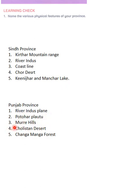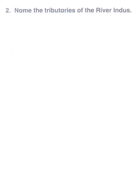Now we talk about Punjab: River Indus Plain, Potohar Plateau, Murree Hills, Cholistan desert, and Changa Manga forests. Those are just five places listed; you may add another five for both provinces. If you're from Balochistan, KPK, Gilgit-Baltistan, or Azad Kashmir, you may do it in the same pattern — you will know the major physical features of your own province.